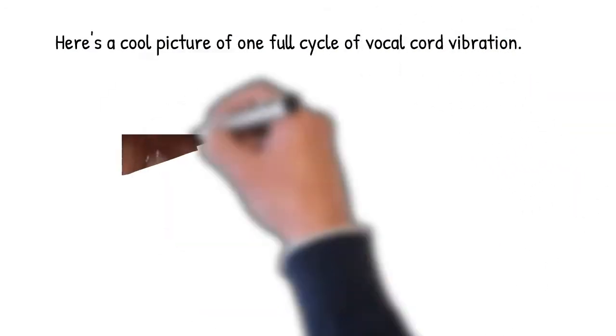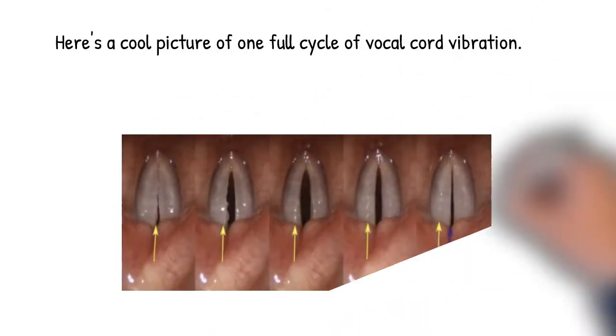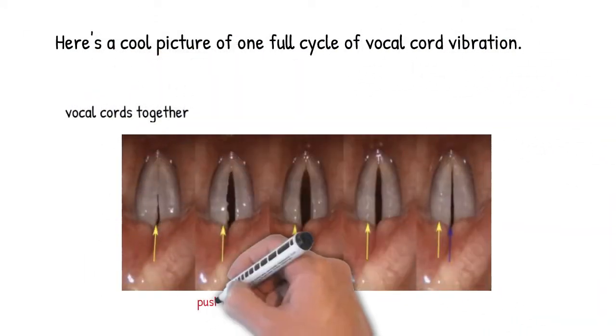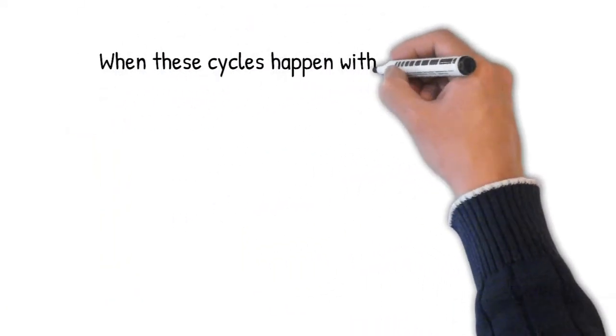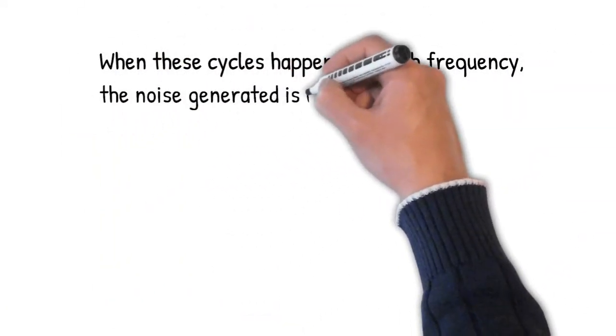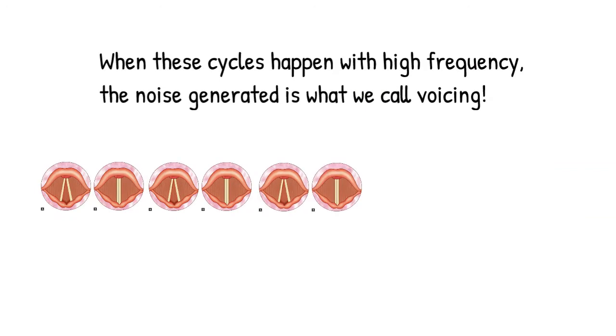Here's a pretty cool picture of one cycle, a vocal cord vibration. We can see the vocal cords together on the left, pushed apart in the middle, and coming back together in the image on the right. When these cycles happen with high frequency, that's voicing.